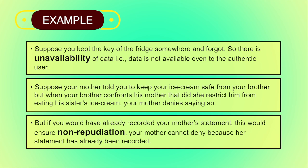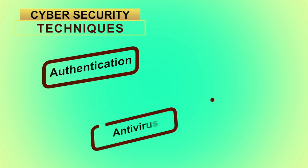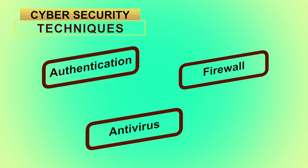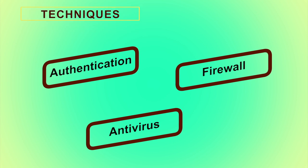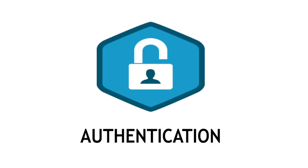I hope this clears all the objectives of information security. Now let us learn about various cyber security techniques: authentication, antivirus and firewall. These are some methods by which we can prevent cyber crimes. We will discuss these methods one by one in detail. The first cyber security technique we are going to discuss is authentication.